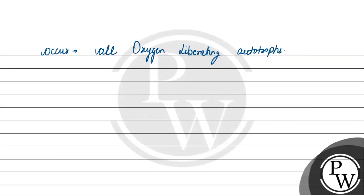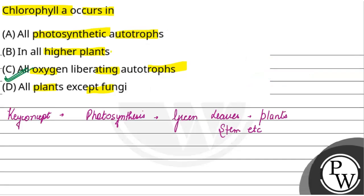It is a universal photosynthetic pigment present in reaction centers. So the answer is all oxygen liberating autotrophs. Hope it is clear.